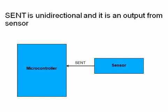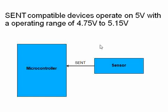Another critical point: SENT protocol compatible devices operate on 5 volts. The operating range of these sensors is 4.5 to 5.15 volts — this is a critical electrical specification. If your devices internally are operating at 3.3V, you will definitely need a level translator.